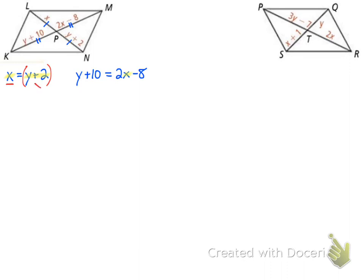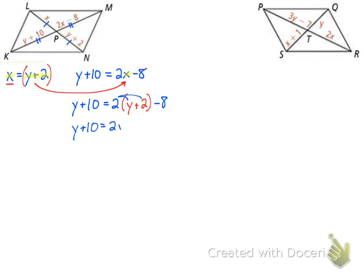Since x equals y plus 2, wherever we see an x we can replace it with y plus 2. So the second equation becomes: y plus 10 equals 2 times (y plus 2) minus 8. Distribute the 2: y plus 10 equals 2y plus 4 minus 8. Combine terms and subtract y from both sides: 10 equals y minus 4. Add 4 to both sides and we get y equals 14.